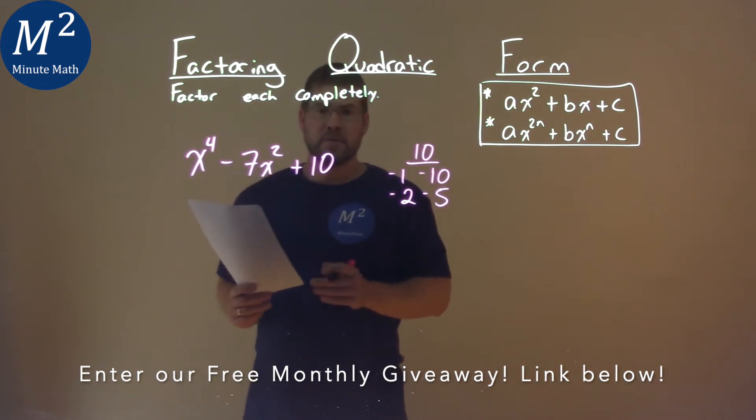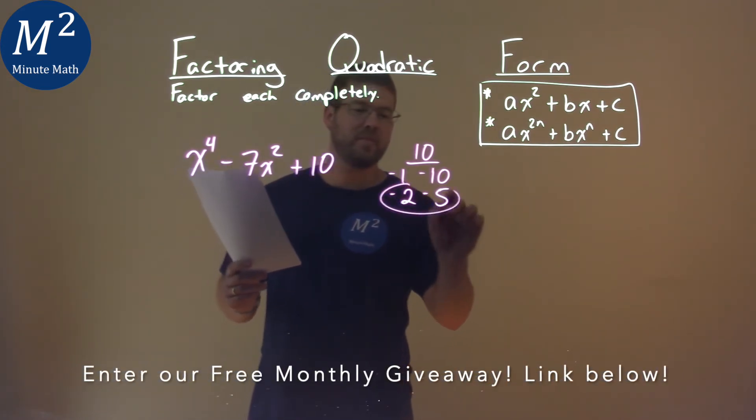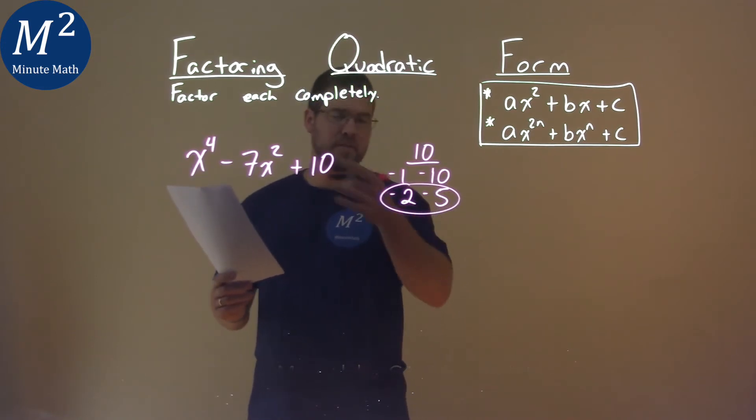Alright, both being negative. So which pairs add to be negative 7? Well, that's 2 and 5. Negative 2 plus negative 5 is negative 7.